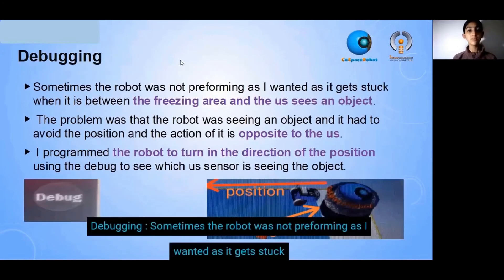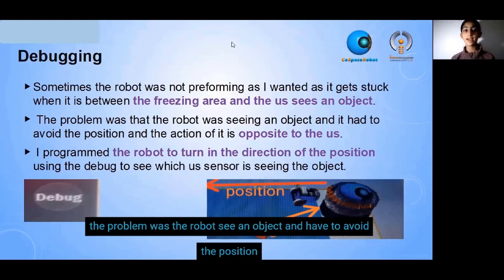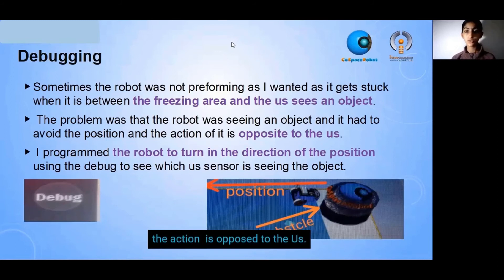Debugging: Sometimes the robot was not performing as I wanted, as it gets stuck when it's between the freezing area and the US sees an object. The problem was that the robot is seeing an object and it had to avoid the position, and the action of it is opposite to the US.